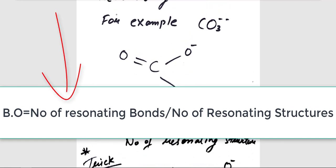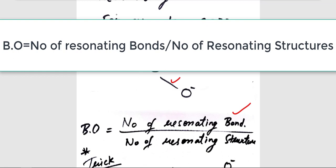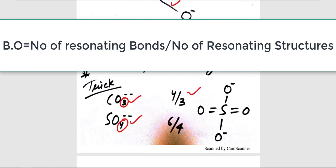To calculate the number of resonating bonds, you have to make the shape of CO3²⁻. You just have to draw it. Once you draw it, you just have to calculate these lines, which is 4 in this case. So the bond order for CO3²⁻ is 4 divided by 3.